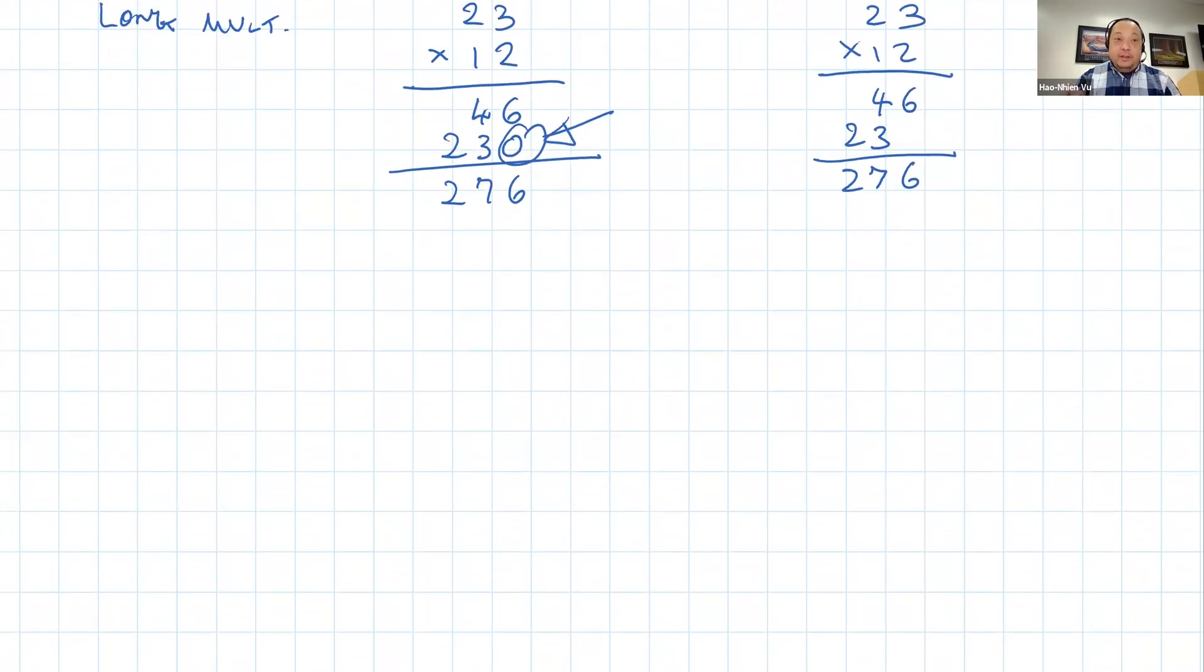A bigger difference is the long division. The US way and the Vietnamese way are like opposite of each other. So let's say if I take 276 divided by 23, which we all know the answer should be 12. Over here will be 276 divided by 23 like this.